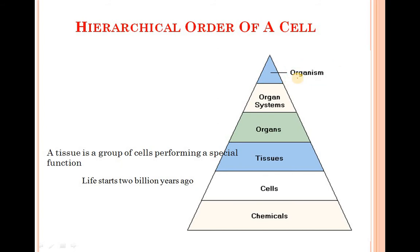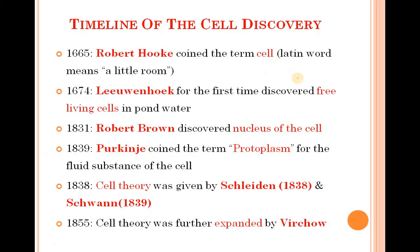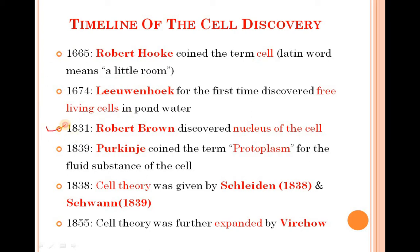Then loads of organ systems come together to form an organism, like animals and human beings — humans are also included in the category of animals in biology. Now the timeline of cell discovery: in 1665, Robert Hooke coined the term 'cell', which means a little room. Then in 1674, Leeuwenhoek for the first time discovered the free-living cell in pond water. Then in 1831, Robert Brown discovered the nucleus of a cell — the round structure at the center of the cell.